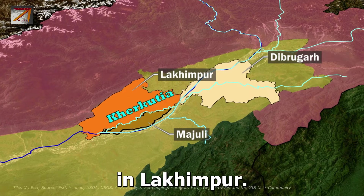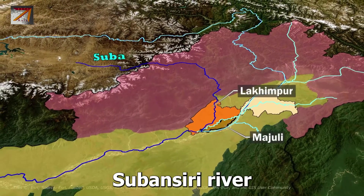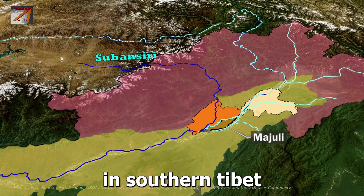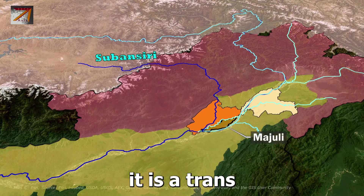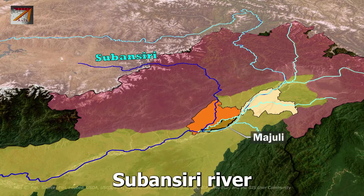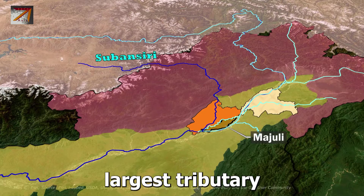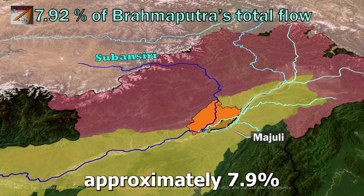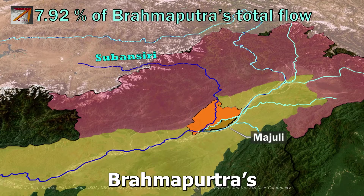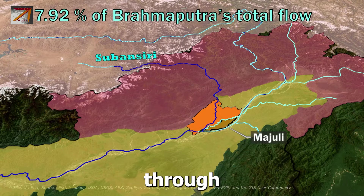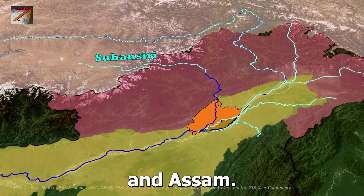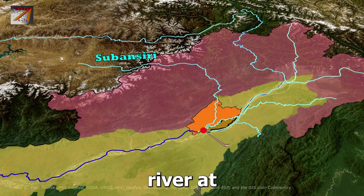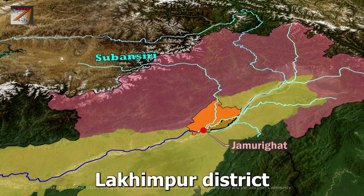Further downstream in Lakhimpur, the Subansiri River merges with Brahmaputra. Subansiri originates in southern Tibet and is a trans-Himalayan river. It is one of the largest tributaries of Brahmaputra, contributing approximately 7.9% of Brahmaputra's total flow. The river flows through Arunachal Pradesh and Assam, joining Brahmaputra at Jamuguri Ghat in Lakhimpur district.